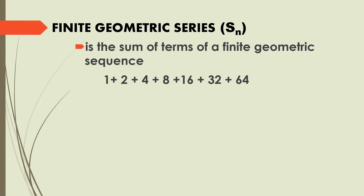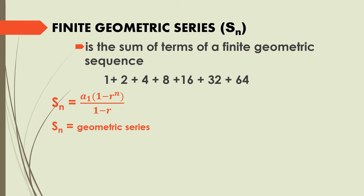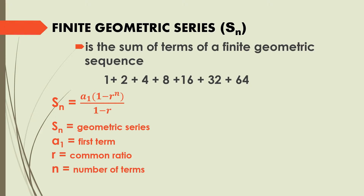How do we solve for a Finite Geometric Series? For the series 1 plus 2 plus 4 plus 8 plus 16 plus 32 plus 64, we can use two different formulae. The first is: S sub n equals a sub 1 times (1 minus r raised to n) all over (1 minus r), where S sub n is the geometric series, a sub 1 is the first term, r is the common ratio, and n is the number of terms.